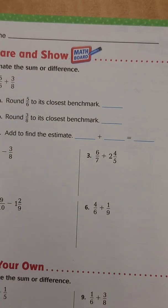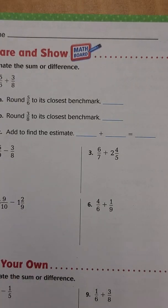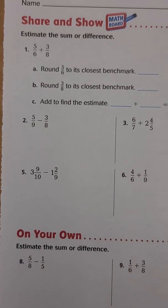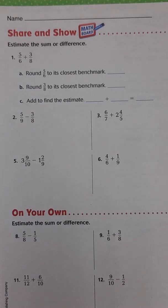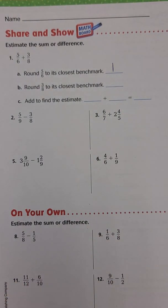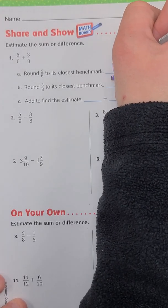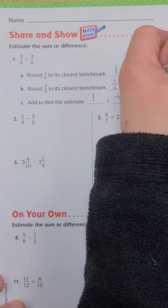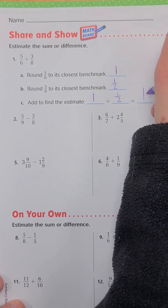Let's go to the Share and Show section. We need to estimate the sum or difference. Number 1: 5/6 plus 3/8. Round 5/6 to the closest benchmark — 5/6 is close to 6/6 which is 1, so we round to 1. Then 3/8: 3 is almost half of 8, so we round that to 1/2. Adding to find the estimate: 1 plus 1/2 equals 1 and 1/2.